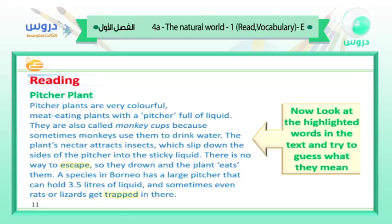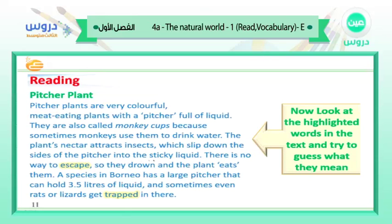Let's guess the meaning — a very important skill. Escape: there is no way to escape, so they drown and the plants eat them. No way to escape means no way to go away from a dangerous situation. The insects are trapped — there is no way to escape. Sometimes even rats or lizards get trapped in there. They can't get away — they are trapped in some dangerous place.